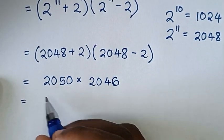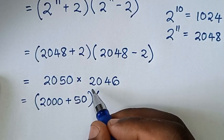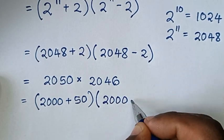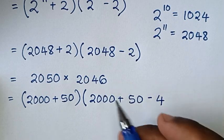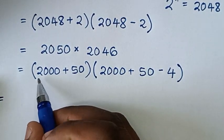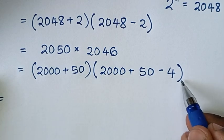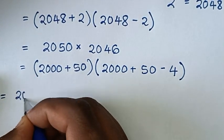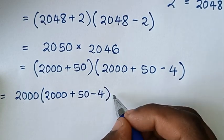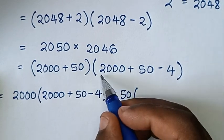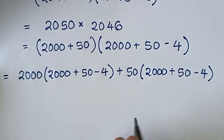Then it will be equal to: from here 2050, which is the same as 2000 plus 50, bracket, times bracket 2046, which is the same as 2000 plus 50 minus 4, so it will be 2046. Then in the next step it will be equal to: we multiply this 2000 times all inside the bracket, then plus 50 times all inside the bracket.